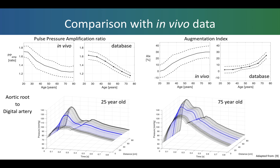We then compared pulse wave propagation phenomena between the simulated and in vivo pulse waves. At the top left, we found that the pulse pressure amplification from the aorta to the brachial artery decreased with age in the database, as is the case in vivo. We also found that the augmentation index increased with age as expected, here measured from the carotid artery. The plots below show how the pulse waves changed with distance from the aortic root, the path here being from the aortic root through the arm to the finger.